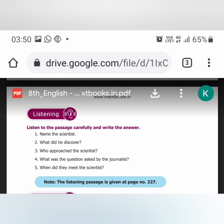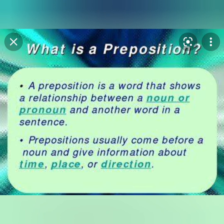The next topic is prepositions. A preposition is a word that shows the relation between a noun or pronoun and another word in a sentence. For example, 'the chalk is on the table' — the word 'on' shows the relationship between the chalk and the table. Prepositions usually come before a noun and give information about time, place, or direction.